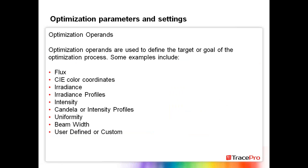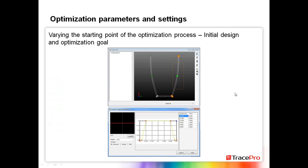Some of the optimization operands — these are the targets used for the goal of the optimization process — include: flux, CIE coordinates, irradiance, irradiance profiles, intensity, candela or intensity profiles, uniformity, beam width, and there's also an option for user-defined or custom targets. If you go back to some of our previous webinars where we actually do optimization examples, you can see these different operands in use.